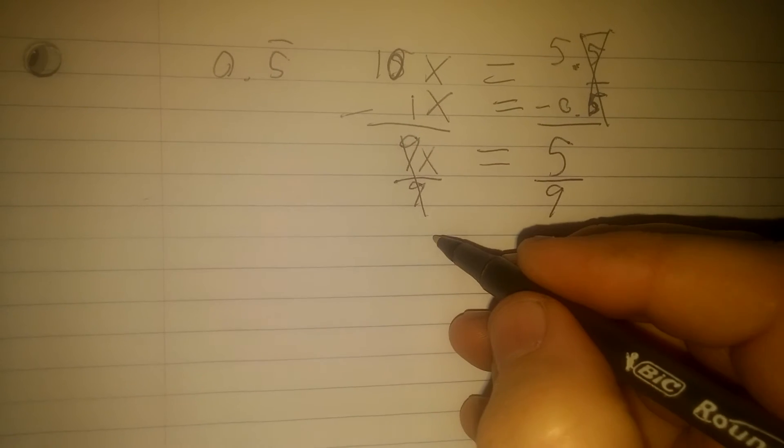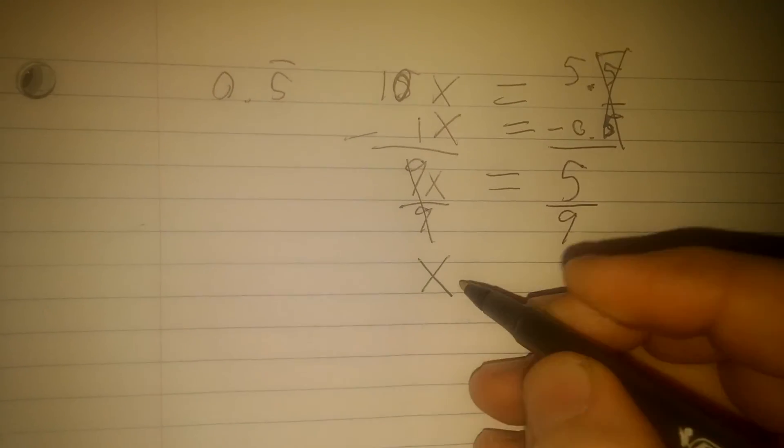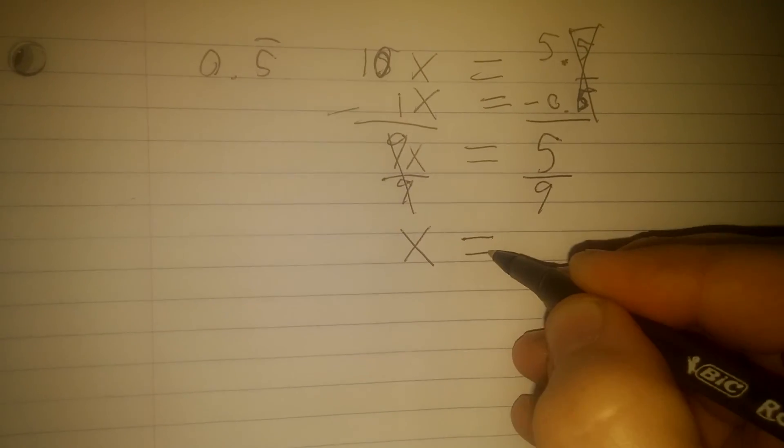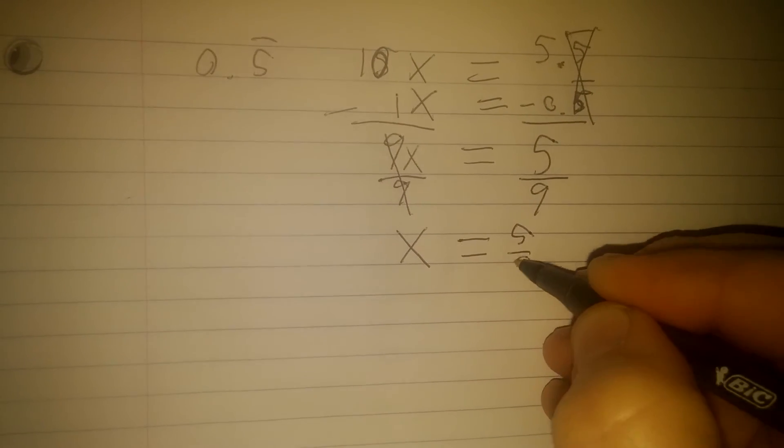The 9 becomes a 1, so now I'm down to just 1x, and x equals 5 over 9.